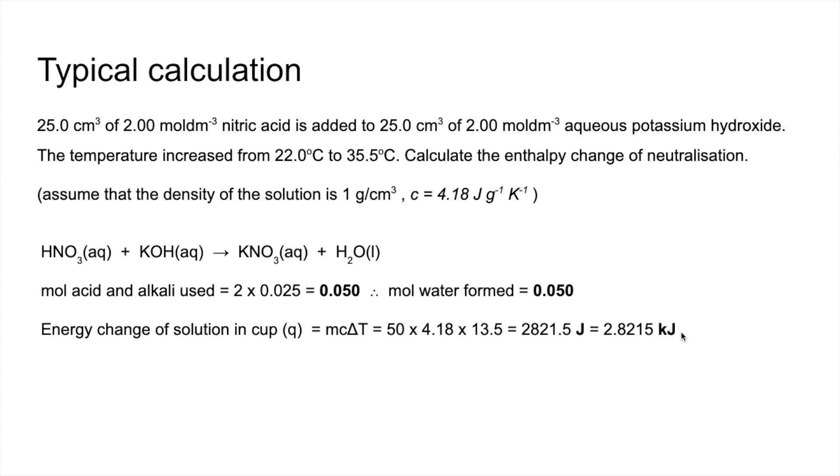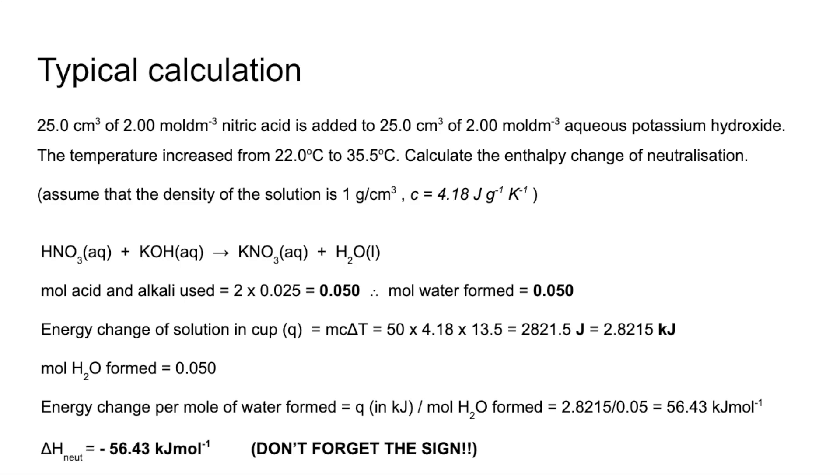Moles of water, as a reminder, there was 0.05, so the energy change per mole of water formed - so that's that Q value in kilojoules divided by the moles of water formed - gives you 56.43 kilojoules per mole. And finally, the delta H, therefore the enthalpy change of neutralization, is minus 56.43. So the temperature of the solution went up, so it's exothermic. Whatever you do, don't forget the sign.